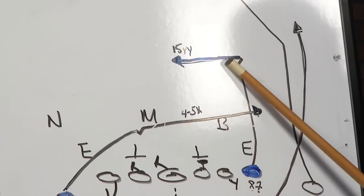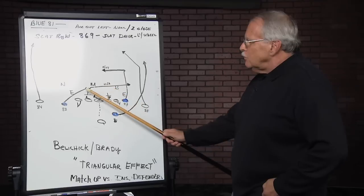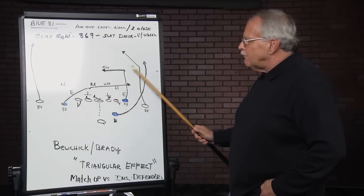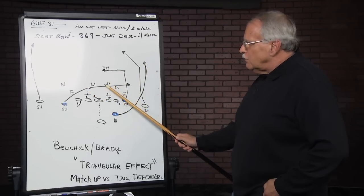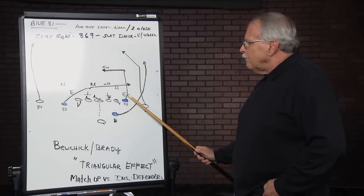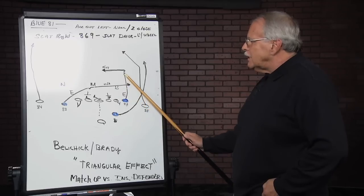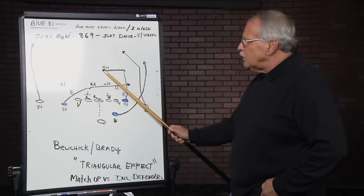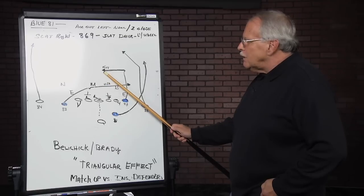Because you can't double all of them. Somebody is eventually going to be single. So if you double or bracket Welker, then you're going to allow Gronkowski to come up and run the 15-yard dig, of which he then becomes the third guy in the priority.